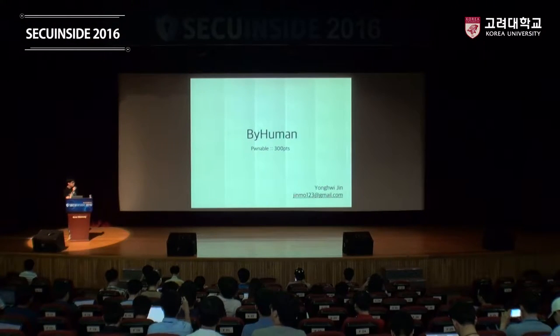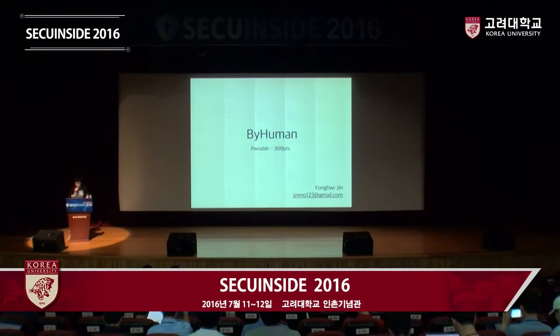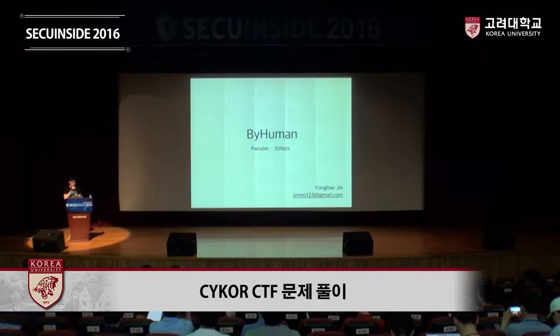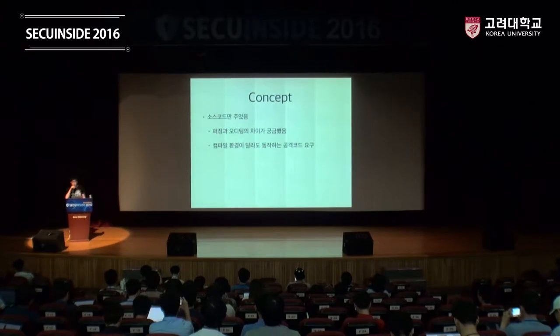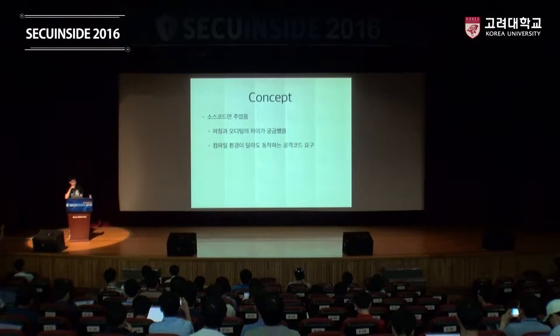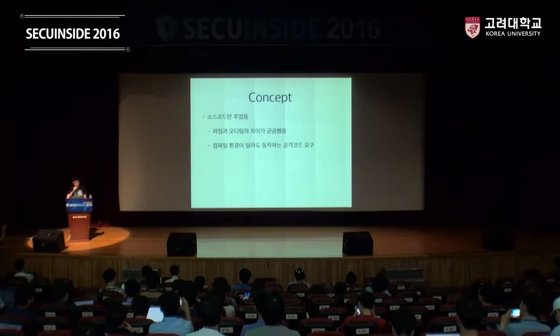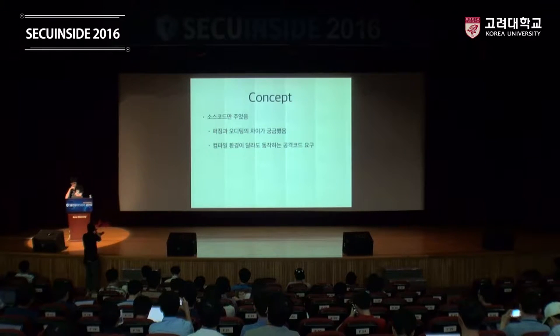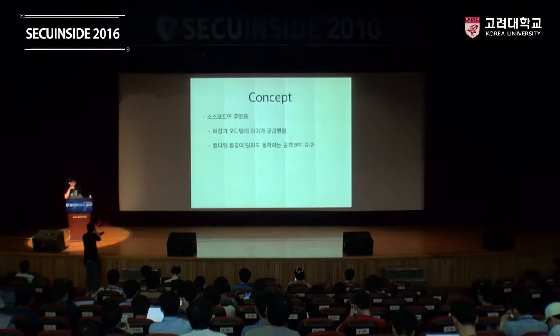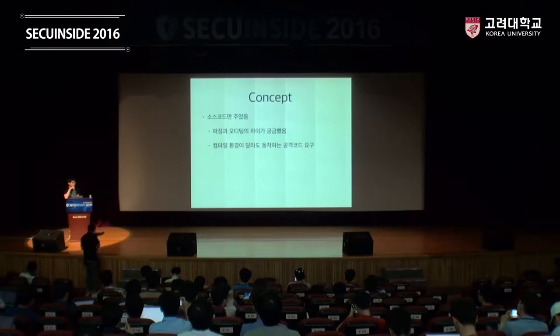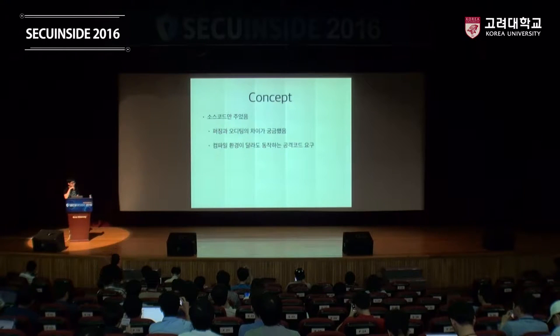저는 By Human이라는 챌린지랑 TrendyWeb이라는 챌린지를 출제했었고요. By Human은 pwn 카테고리로, 컨셉은 평소에 퍼징으로 취약점을 찾는 거랑 오디팅으로 찾는 거랑 사람들이 어떻게 생각을 하고 시간은 얼마나 걸릴지 궁금해서, 평소에 CTF에서 바이너리만 보셨을 테니까 이번엔 소스코드만 줘보자, 그리고 바이너리를 메모리 리그를 통해서 얻어오게 하자는 식으로 컨셉을 줬고요. 소스코드상에서 취약점이 아닌 것 같은데 취약하고 이런 취약점을 내는 것을 컨셉으로 잡았었어요.